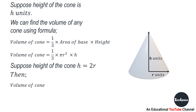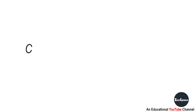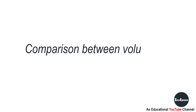Suppose the height of the cone h is equal to 2r. Then, volume of cone equals 1/3 times pi r squared times 2r, so the volume of cone equals 2/3 pi r cubed.